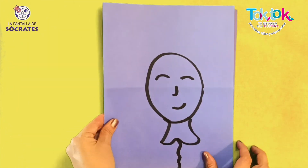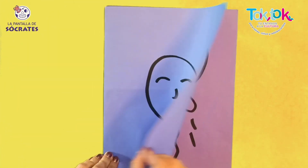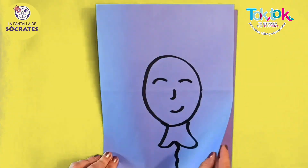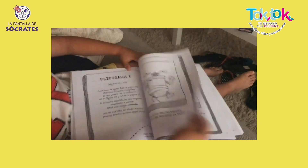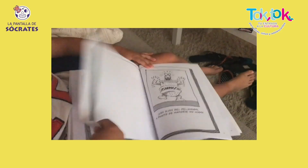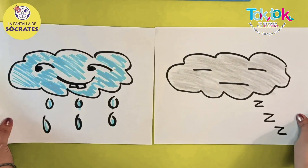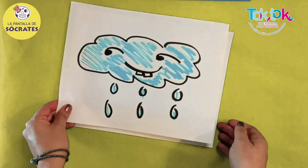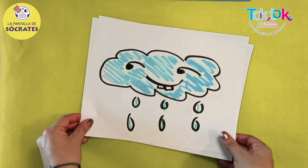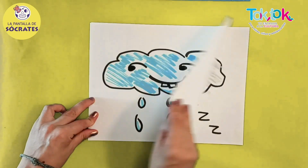Hoy haremos un fliporama, que es la forma más sencilla de crear imágenes en movimiento. Seguro que ya has visto fliporamas en algunos libros. En un fliporama simplemente necesitas dos dibujos en secuencia y que al girarlos rápidamente adquieren vida, como en este fliporama que tenemos aquí.